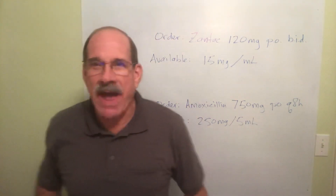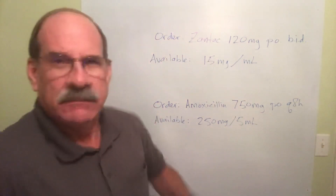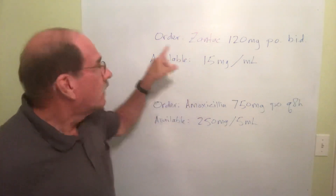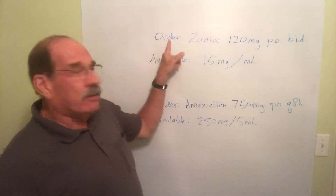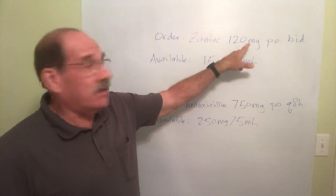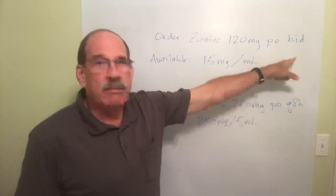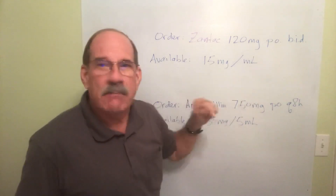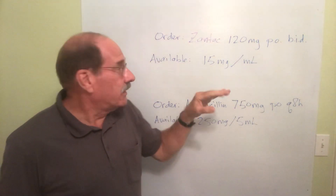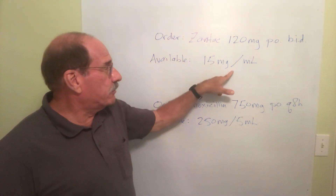Okay, here we go. Here's the next order: I have an order for Zantac, 120 milligrams, to be given by mouth orally BID — what does that mean? Twice a day. And I have Zantac at 15 milligrams per milliliter.